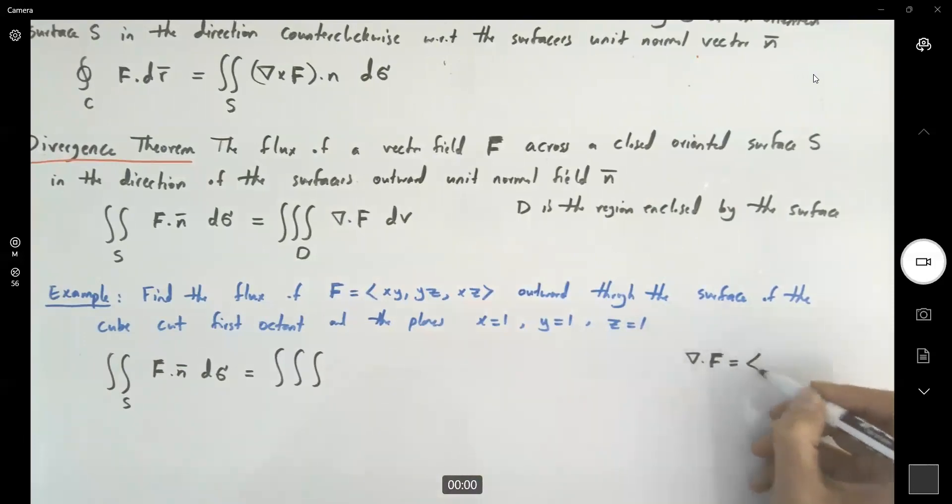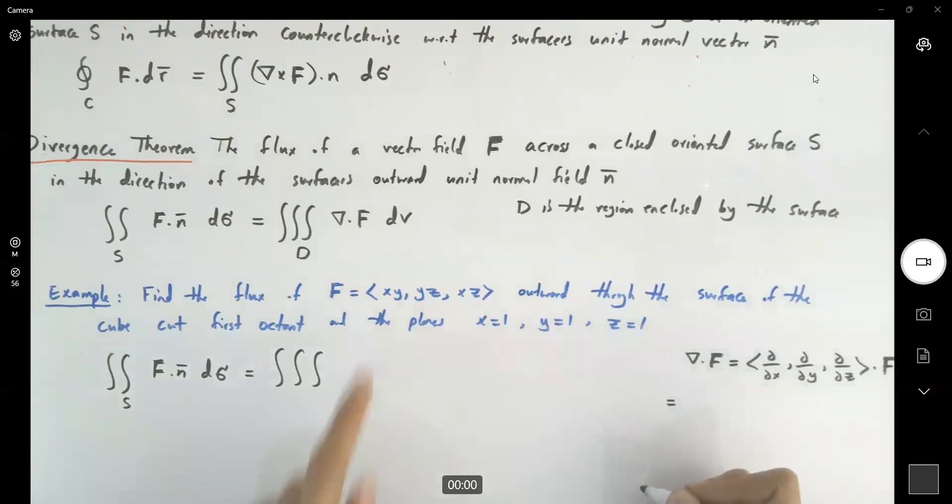This is equal to partial derivative with respect to x, partial derivative with respect to y, partial derivative with respect to z dot f. Which gives us, well, the partial derivative with respect to x is going to be y, partial derivative with respect to y is z, partial derivative with respect to z is x. So, so far so good. We have y plus z plus x, and then dv.